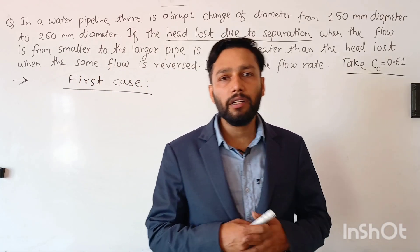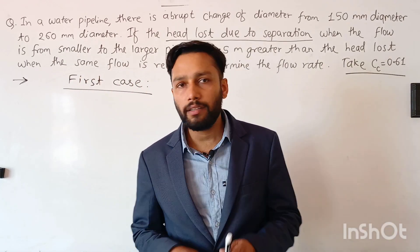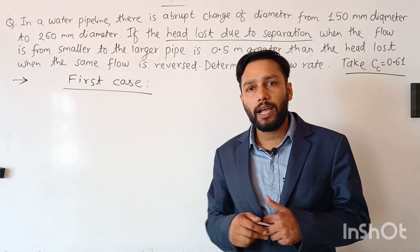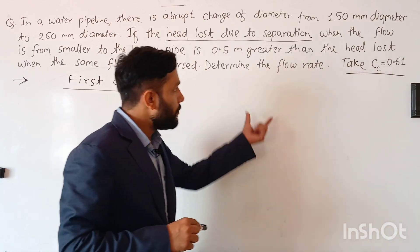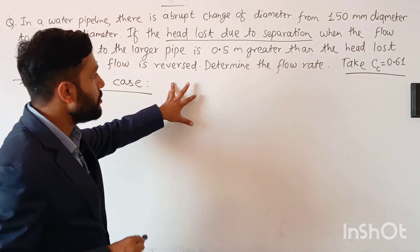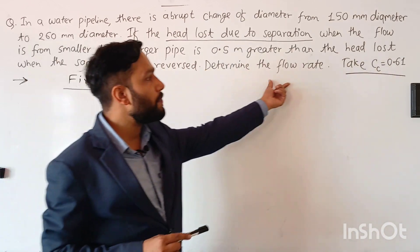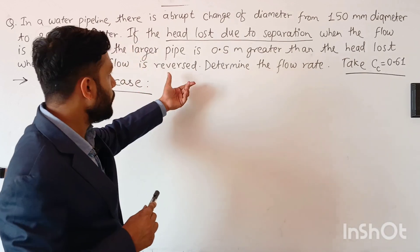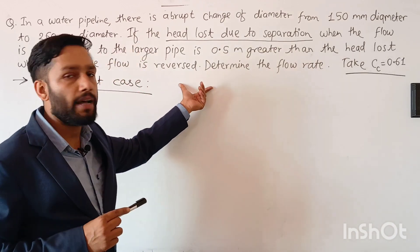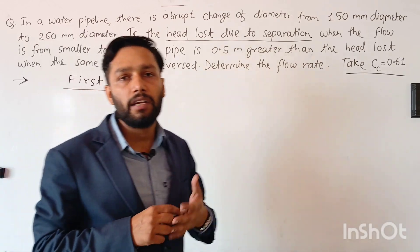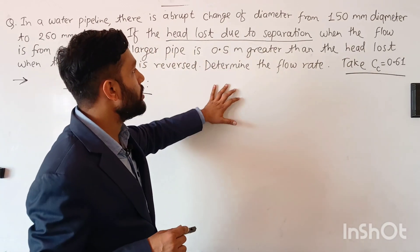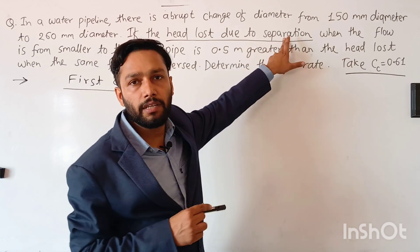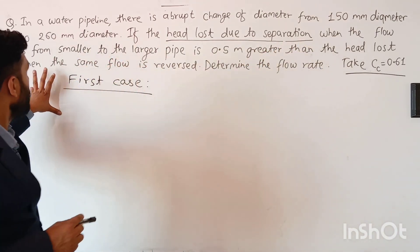Hi everyone, I am Avsik Kordhal. Welcome back to my channel. Today I am going to solve a problem from hydraulics pipe flow. In this problem you are supposed to find out the discharge passing through the compound pipe system in which you only have to consider the minor head loss which is caused by eddy formation due to separation. So let us get into the problem.